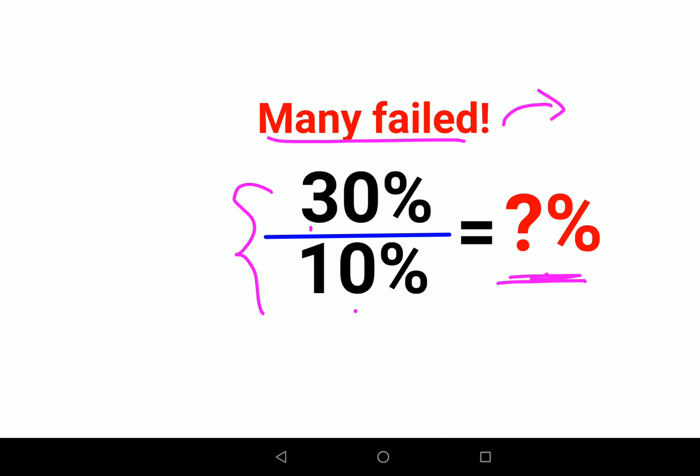First, let's very quickly understand: whenever you have a percentage sign in front of a number, you can convert it to a fraction by dividing that number by 100. Why 100? Because percent means divide, and cent means hundred.